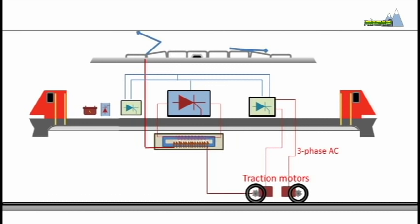For the traction motors to efficiently drive the wheels, many small but important components are also needed. Auxiliary inverters and rectifiers power these smaller components.